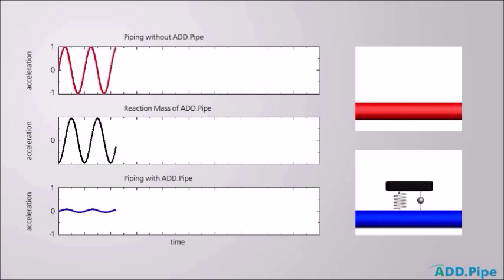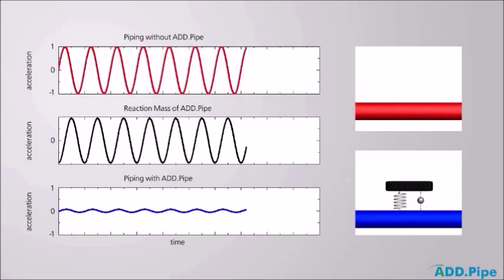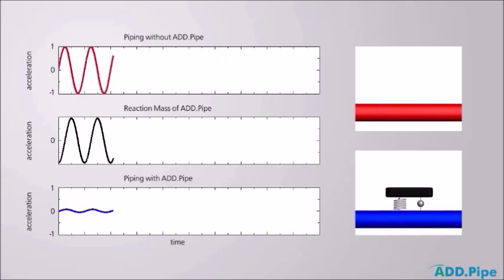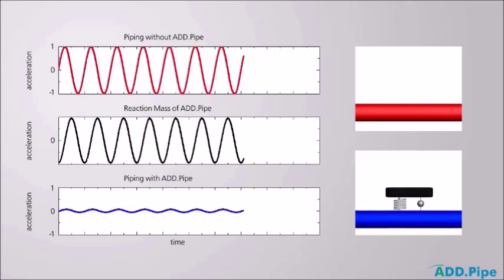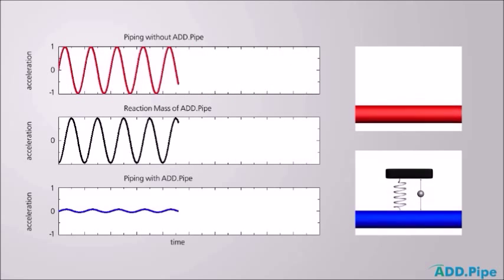The vibrations produced by the reaction mass of the active absorber, here displayed as a black curve, proceed in a direction opposite to the vibration of the piping system. The result?